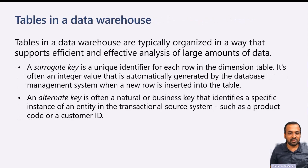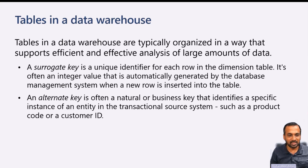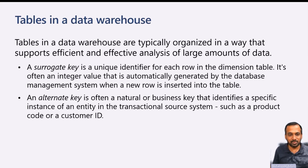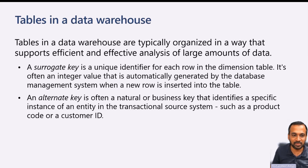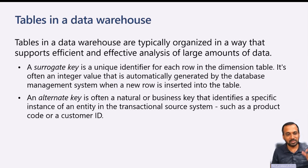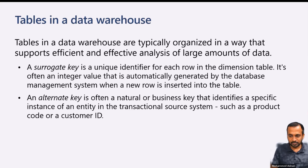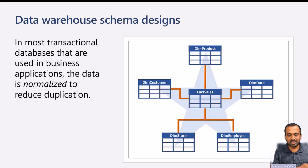Tables in a Data Warehouse are typically organized in a way that supports efficient and effective analysis of large amounts of data. A surrogate key and alternate key are unique identifiers for each row in a dimension table. The surrogate key is often an integer value automatically generated by the database management system when a new row is inserted into the table. The alternate key is often a natural or business key that defines a specific instance of an entity in a transaction source system.